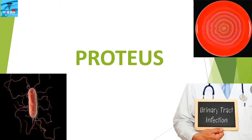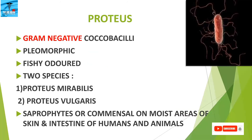This video is about gram-negative coccobacillus Proteus. Proteus are gram-negative coccobacillus which exhibit pleomorphism, meaning they can vary in size. They have a fishy odour in culture. There are two species: Proteus mirabilis and Proteus vulgaris. Proteus are saprophytes or commensals on moist areas of the skin and intestine of humans and animals.